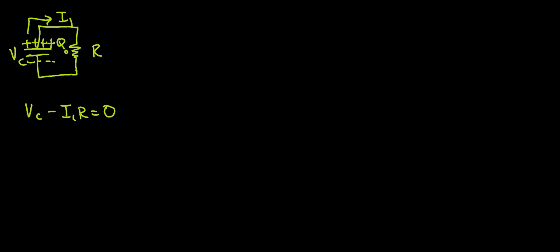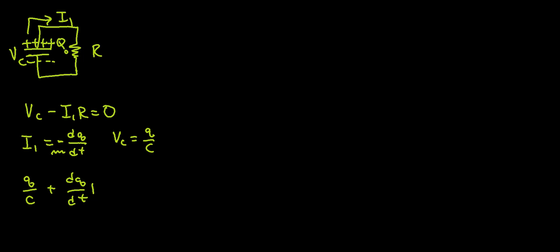Let's write Kirchhoff's loop. We have V_C minus I1·R equals 0. Just like the charging circuit, we rewrite I1 with the differential equation. However, this time I1 is proportional to negative dQ/dt, because the charge is decreasing. V_C is still equal to Q over C. Plugging in, we get Q over C plus dQ/dt times R equals 0.